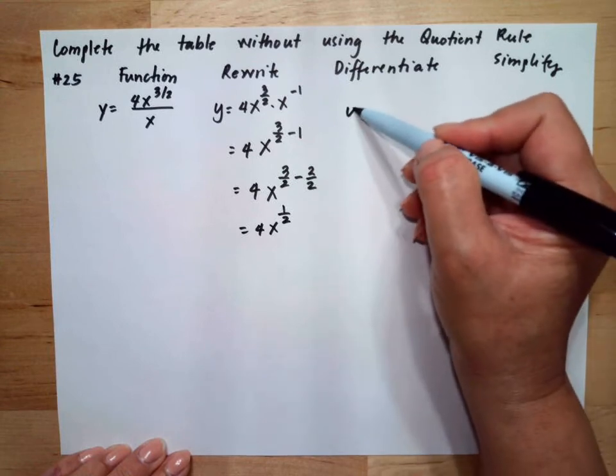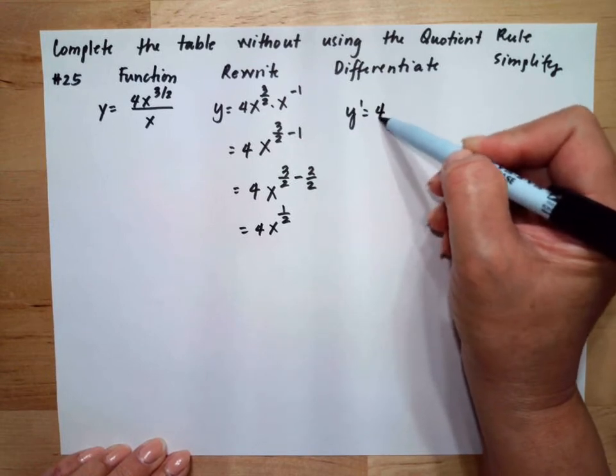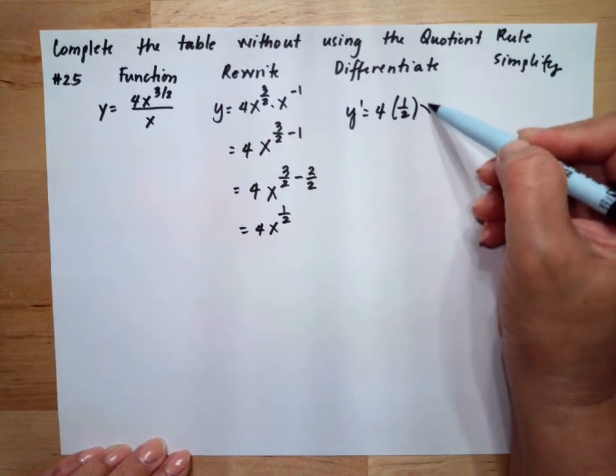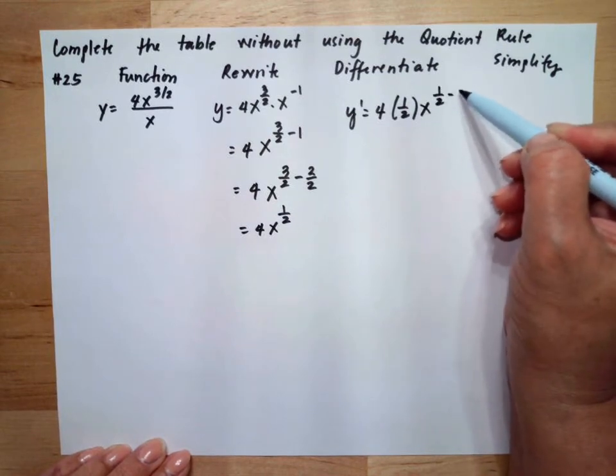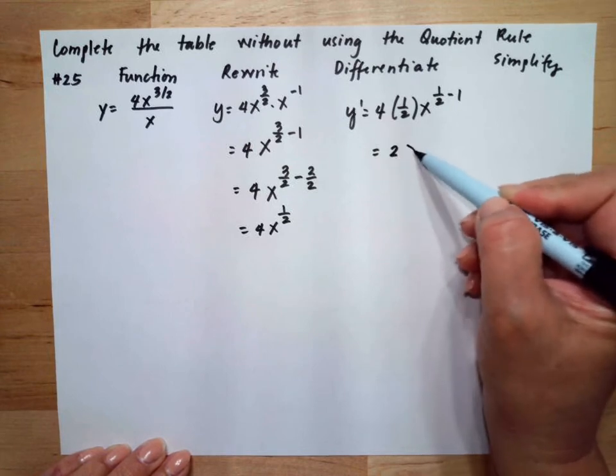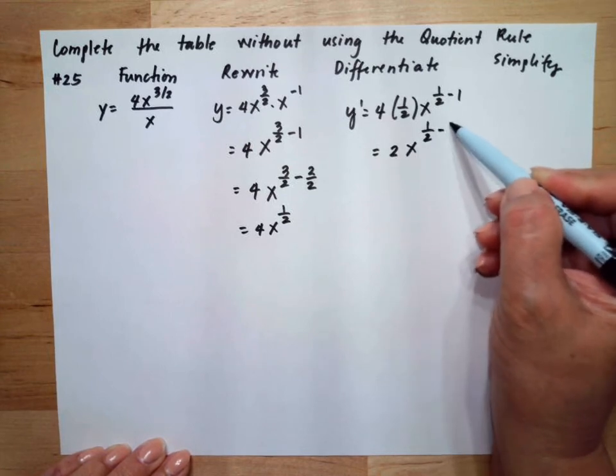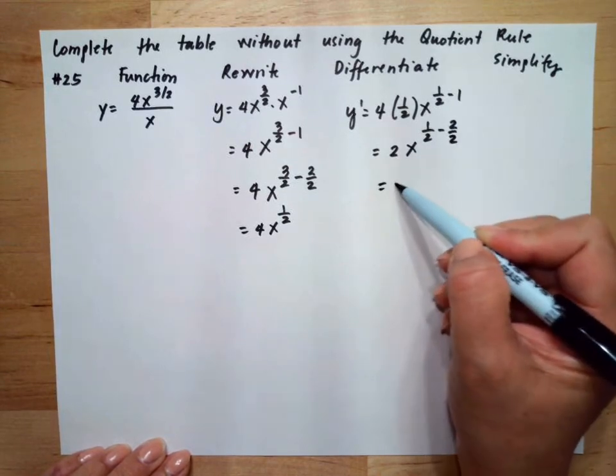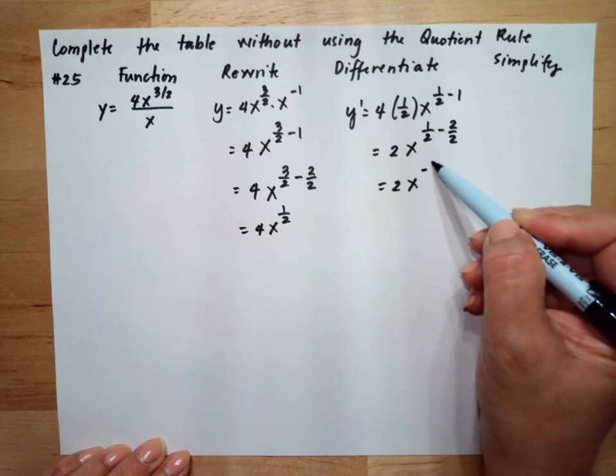To get the derivative, it will be 4 multiplied by the exponent of 1/2, times x to the 1/2 minus 1. So 4 over 2 will be 2x to the 1/2 minus 2/2. This will be 2x to the negative 1/2.